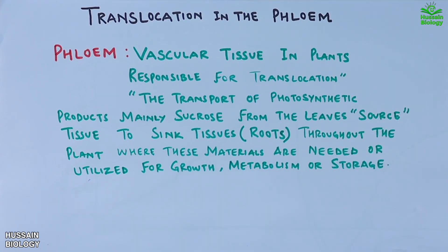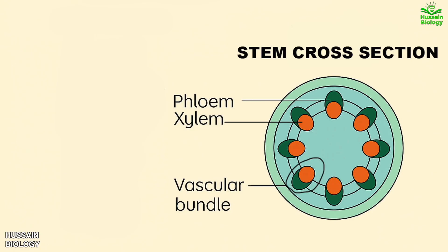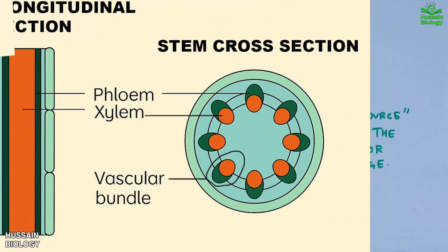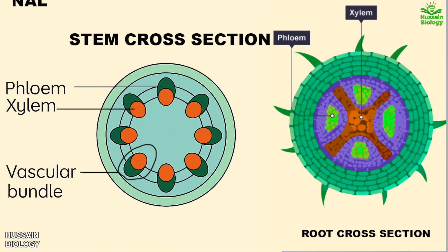In this diagram we can see the cross section of stem showing the vascular bundles. The green ones are the phloem whereas the orange ones are the xylem. In the longitudinal section we have the phloem in green and xylem in orange. When we see the section through a root, it shows different anatomy — the xylem is in the center shown in orange, whereas phloem is shown in green.